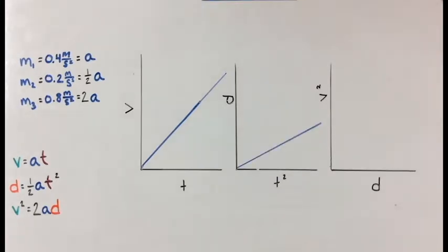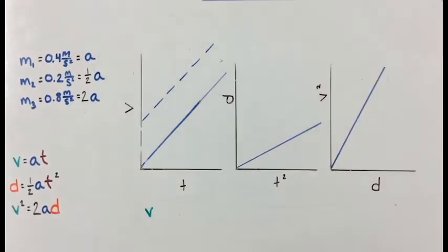Here are all of our graphs. In our experiment, the cart started from rest. Therefore, our velocity time graph has a y-intercept at 0 meters per second.